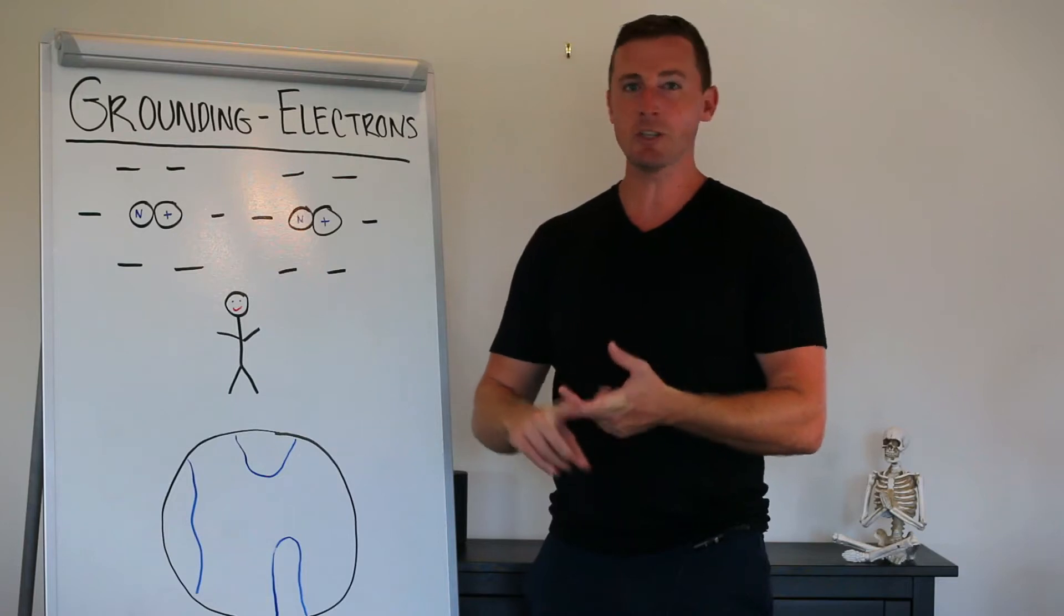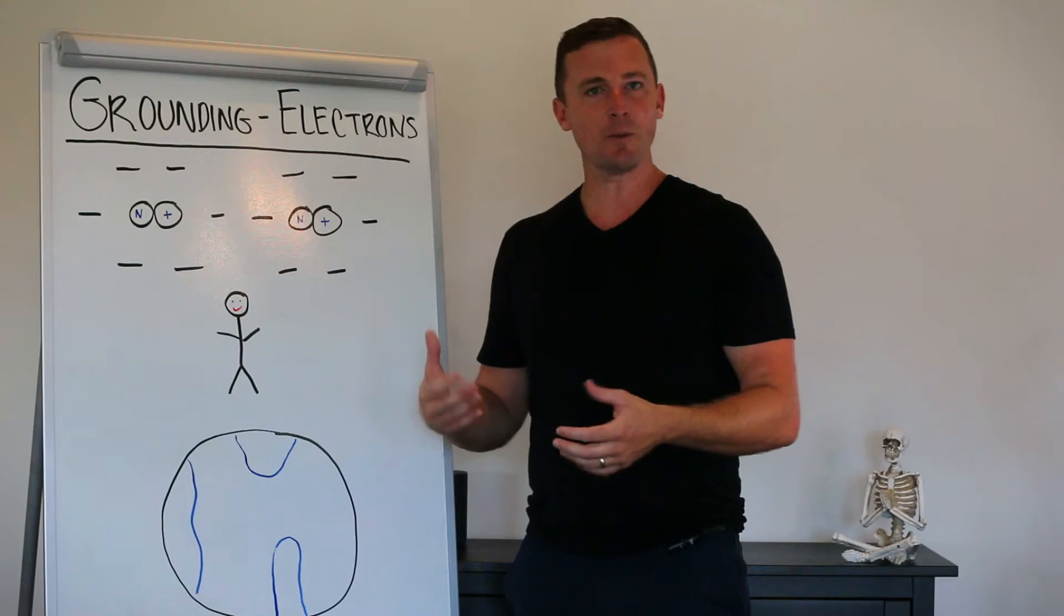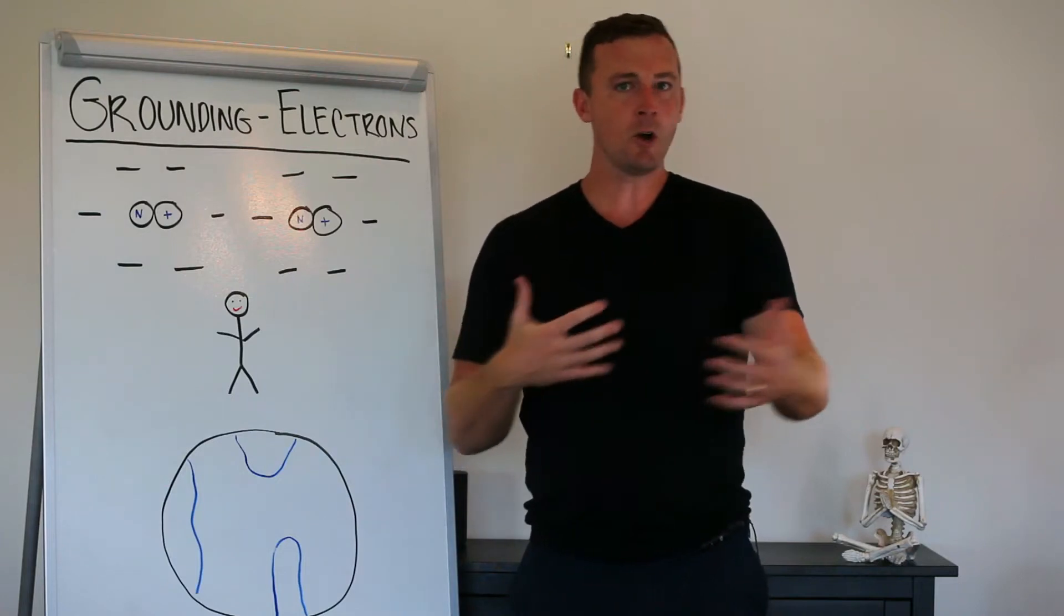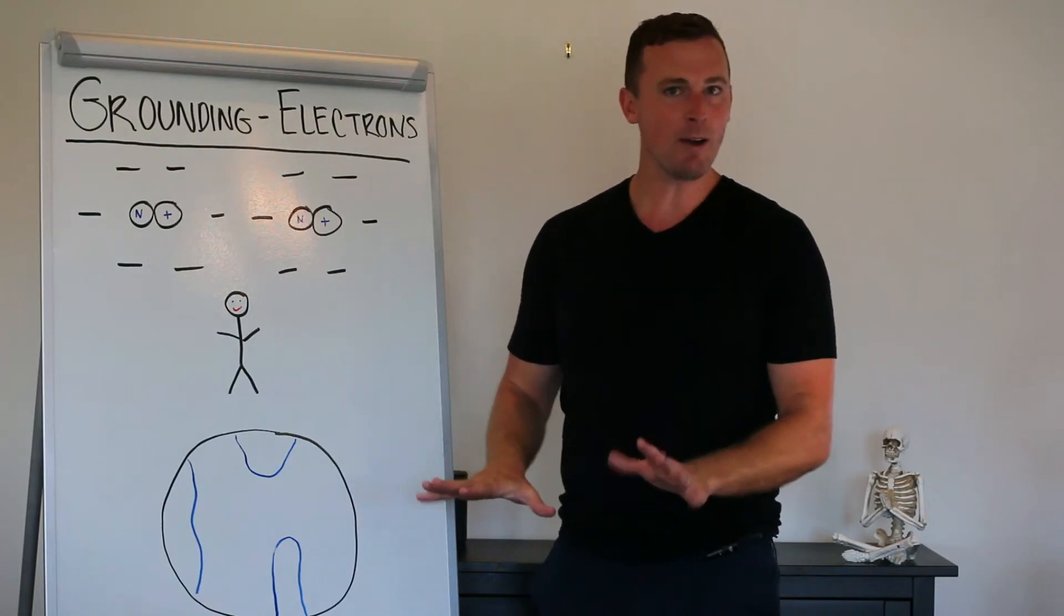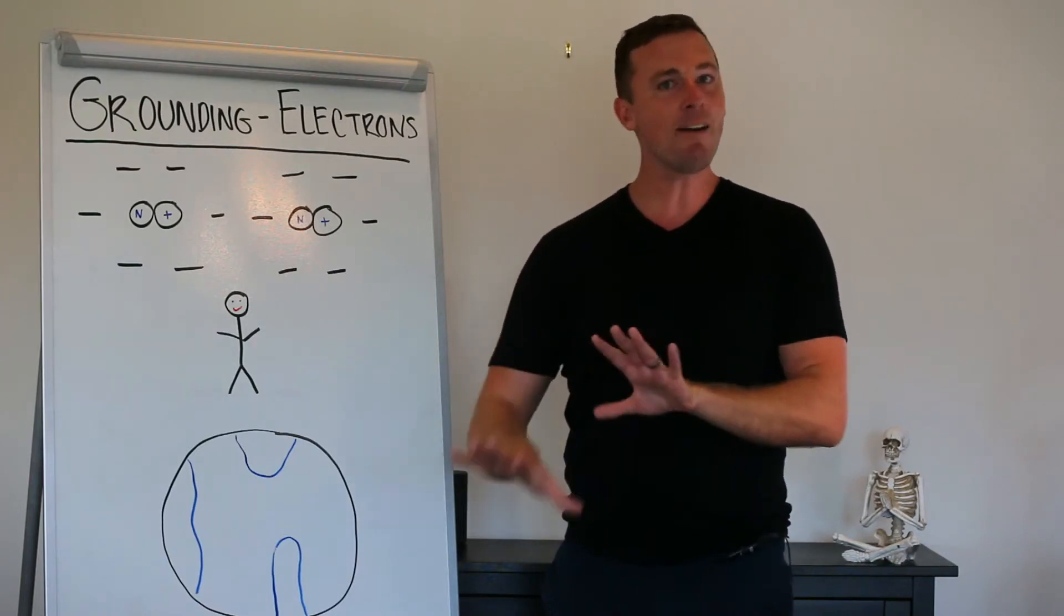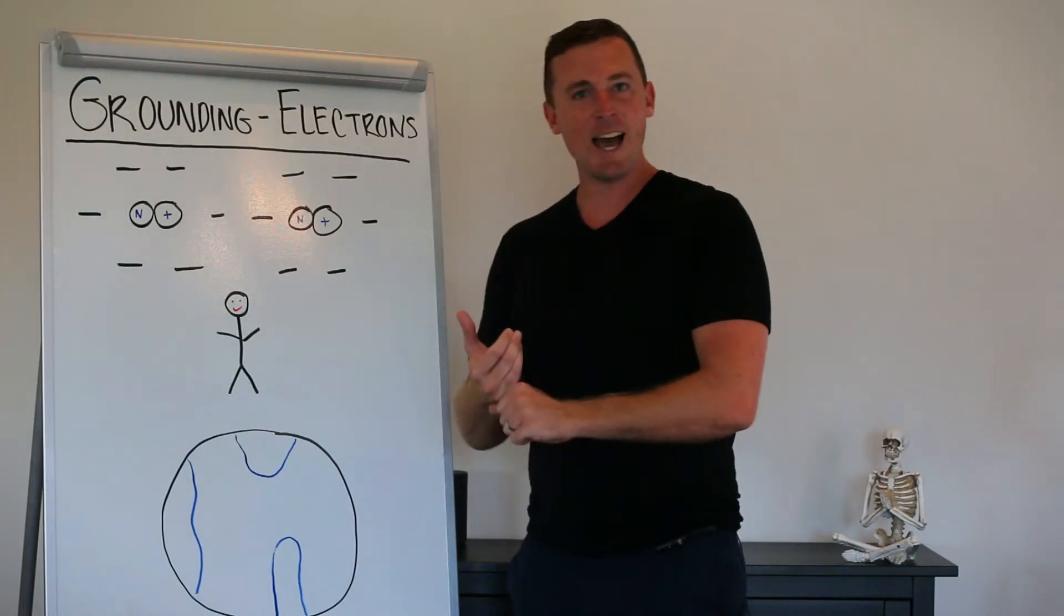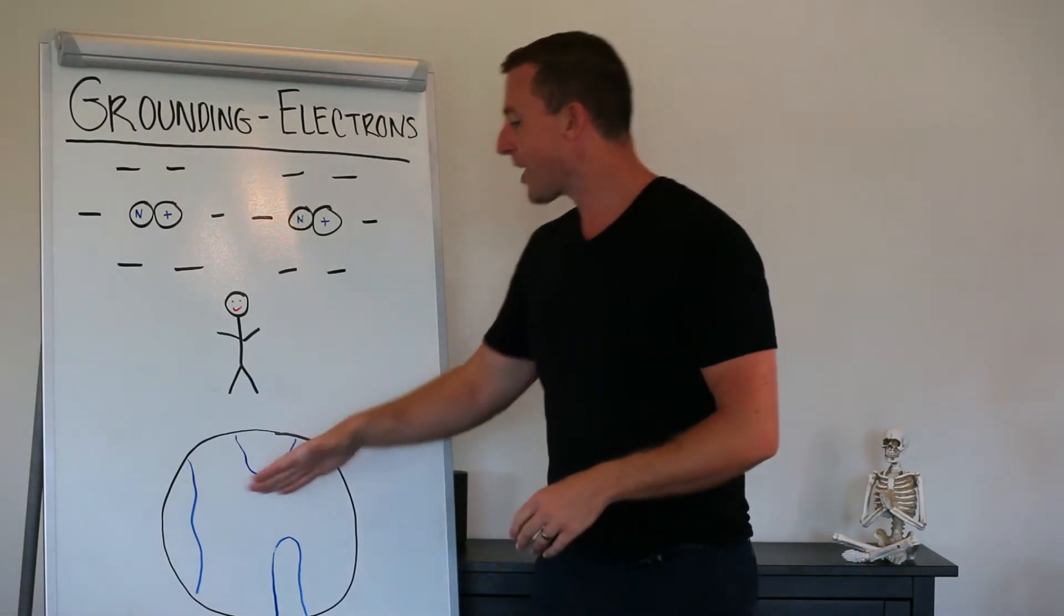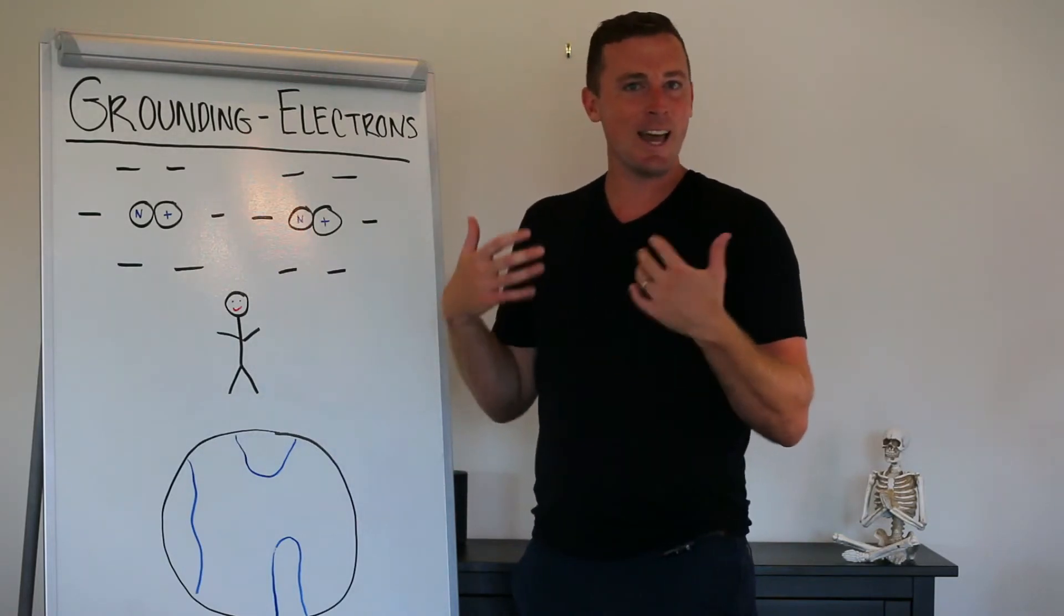So getting electrons into the body is step number one. And we have to have contact with the earth to do that. The problem is we're always wearing rubber-soled shoes. Most of us aren't outside very much anyway. So most synthetic materials are going to be excellent insulators, which means there's no exchange of electrons whatsoever. So even though we might be going for walks and we might be actually outside, a lot of times there's no electric connectivity with the earth whatsoever because we've insulated ourselves away from it.